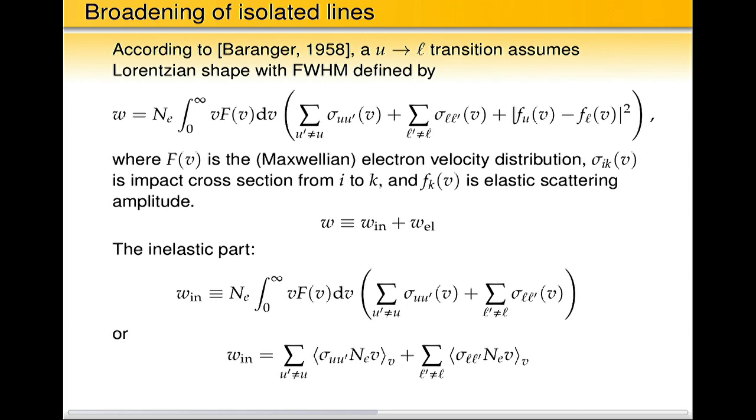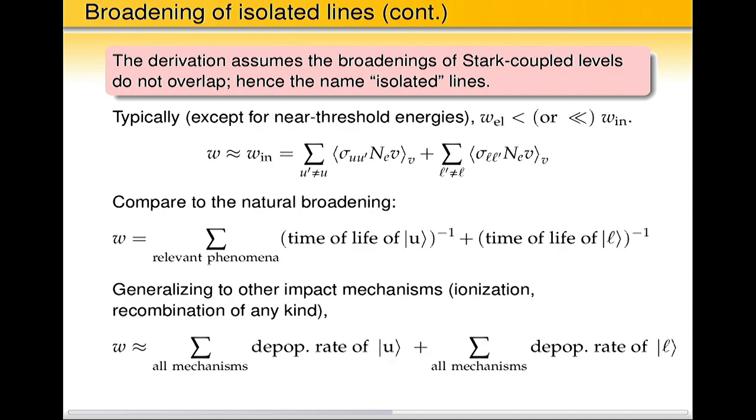There is something more, which is less evident. And here is the difference of elastic scattering amplitudes of the upper and lower level. So it can be, the total broadening, the total width, can be written as a sum of this in the elastic part and elastic part.